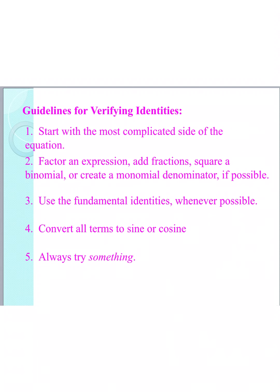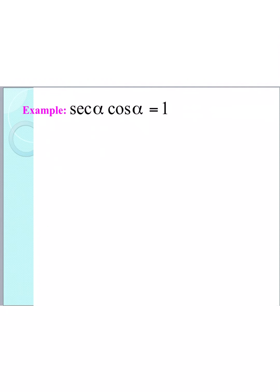And then lastly, just try something — you never know where it's going to lead. All right, here's our first example. We have secant of alpha times the cosine of alpha is equal to one.